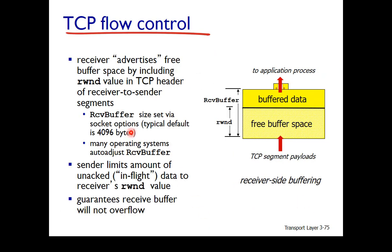How does TCP do this? The receiver will advertise how much free buffer space is available by including the receive window value in the TCP header of the receiver-to-sender segments.